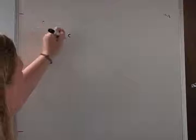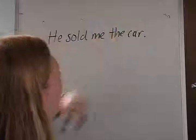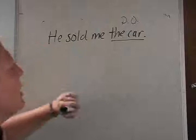Let's look at some examples in English using direct and indirect object pronouns. He sold me the car. What did he sell? He sold the car, so this is your direct object. Who did he sell it to? He sold it to me, so this is your indirect object.